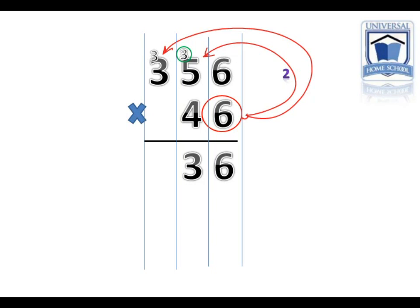Step 3. 6 times 3 equals 18, plus the 3 equals 21. We put the 1 down, and we create another column to put the 2 into.